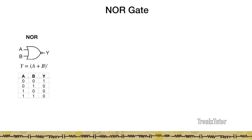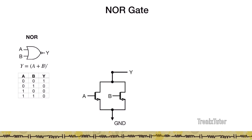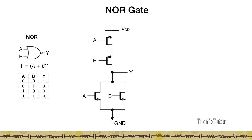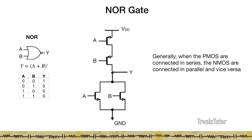Now let's look at the NOR gate, given by the Boolean expression (A+B)'. The truth table shows that Y is one only when both A and B are zero. So the pull-up network must short to one only when both are zero. The pull-down network must be shorted when either A or B is one, so it consists of NMOS transistors connected in parallel. This parallel connection ensures the network shorts to ground when either A or B is one. For the pull-up, a series connection of PMOS ensures it shorts to one only when both A and B are zero. In the NOR gate, PMOS are in series and NMOS are in parallel.